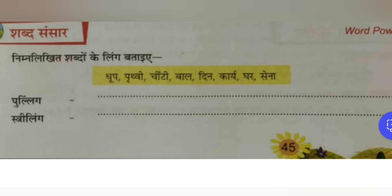Apart from the rules, we have some clues from the kriya pad and sarvanaam. Karti hai is used for striling; karta hai is for pulling. From sarvanaam: mera is for pulling, meri is for striling; uska is for pulling, uski is for striling. So by seeing the sarvanaam and the kriya pad, we can categorize words in Hindi language as either pulling or striling.